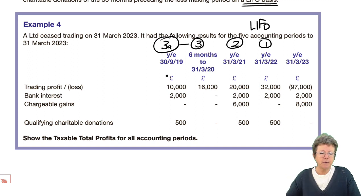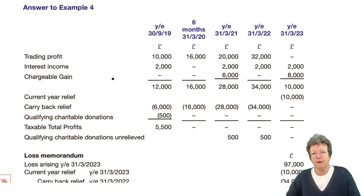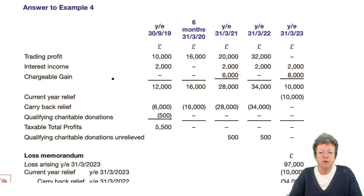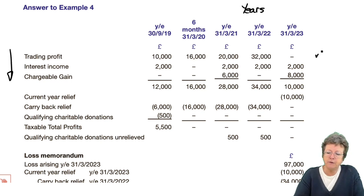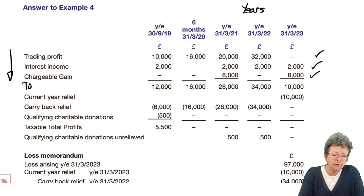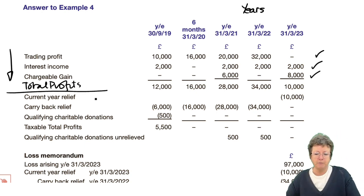When you've set up the answer, it should look like that. I do hope you paused it and had a go yourself. We've put the years across the top and the pro forma down the side. We copied all of those figures and subtotalled to our total profits.